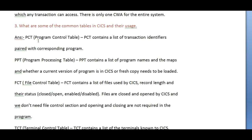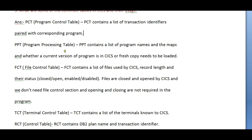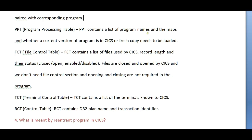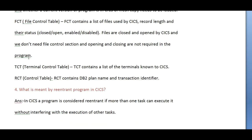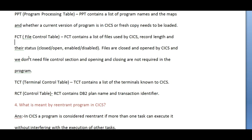What are some of the common tables in CICS and their usage? The common tables are: PCT, Program Control Table — this contains a list of transaction identifiers paired with corresponding programs. PPT, Program Processing Table — containing a list of program names and maps, and whether a current version of the program is in CICS or a fresh copy needs to be loaded. FCT, File Control Table — contains a list of files used by CICS, record length, and their status, whether closed, open, enabled, or disabled. Files are opened and closed by CICS, so file open and close operations are not required in the program.